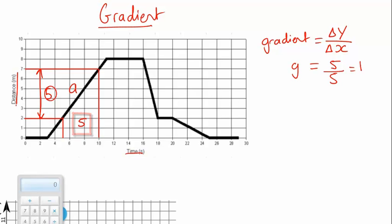Five divided by five equals one. Because this distance is in meters and time is in seconds, the units are meters over seconds, or meters per second. I've just worked out the speed from this graph.